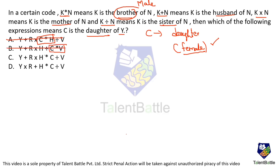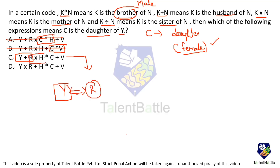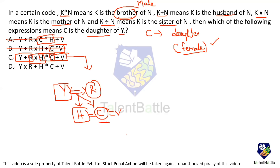Now checking option C: Y plus R means Y is husband of R, so R is wife of Y. R into H means R is mother of H, so H is also a child of Y. H star C means H is brother of C, so C is a child of Y — gender still unknown. C divided by V means C is sister of V, confirming C is female and therefore a daughter of Y. This satisfies the condition, so the answer is option C.